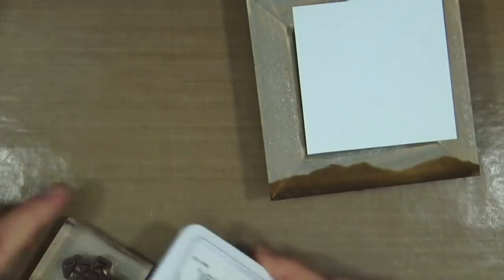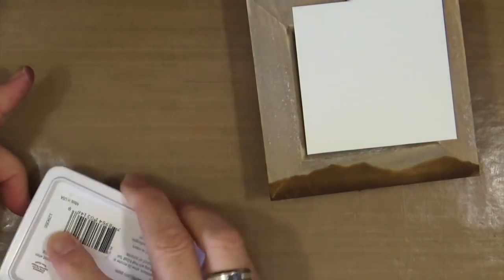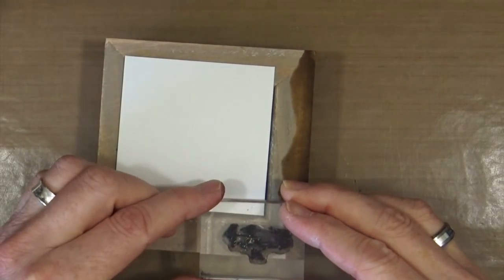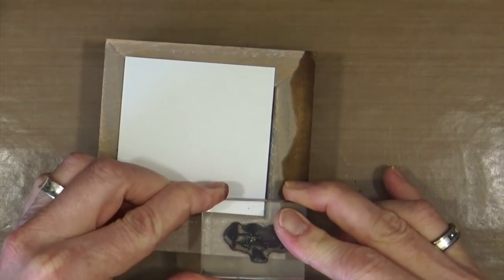And again using the jet black archival ink, I'm now going to stamp some of those mushrooms that we used on the base, on our main image, also onto the front of our frame.